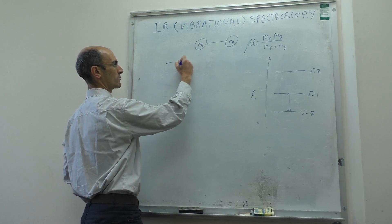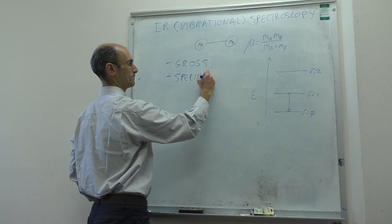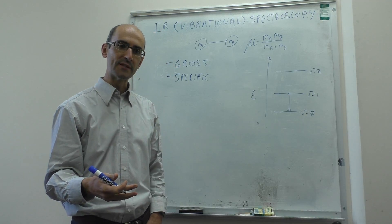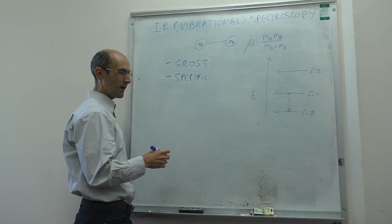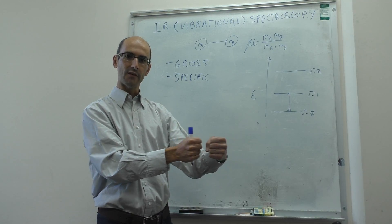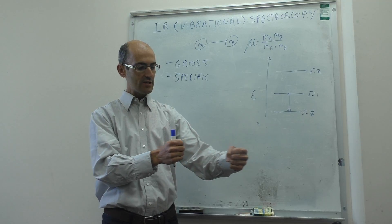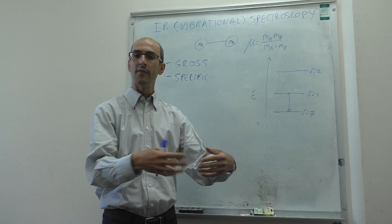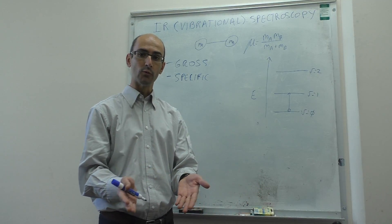There are two selection rules. The first is the gross selection rule, and the second is the specific selection rule. The gross selection rule tells you what molecules will be active in infrared spectroscopy — which molecules absorb infrared radiation. What has to happen is that when the molecule vibrates and absorbs a photon to excite a vibration, the dipole moment of the molecule needs to change, so that change can interact with the oscillating electric field of the photon.